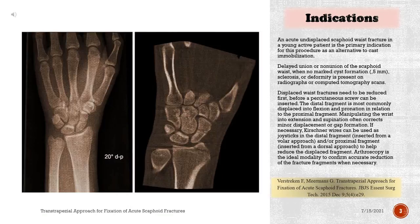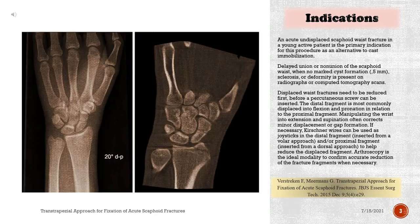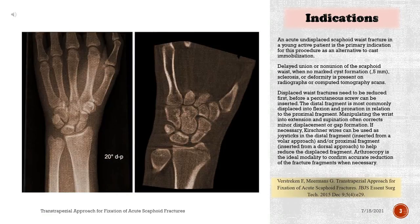Displaced waist fractures need to be reduced first before a percutaneous screw can be inserted. The distal fragment is most commonly displaced into flexion and pronation in relation to the proximal fragment. Manipulating the wrist into extension and supination often corrects minor displacement. If necessary, Kirschner wires can be used as joysticks in the distal fragment, inserted from a volar approach, and or proximal fragment, inserted from a dorsal approach, to help reduce the displaced fragment.